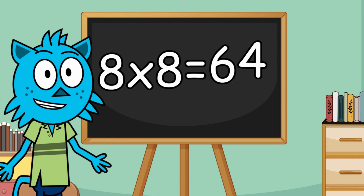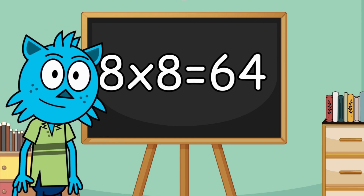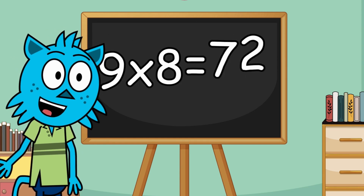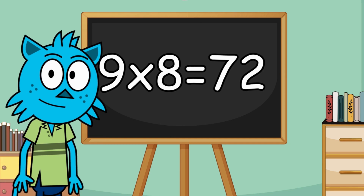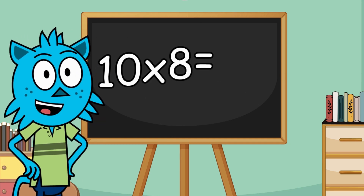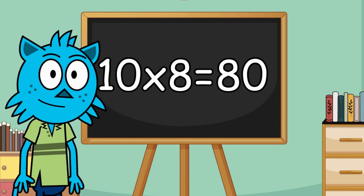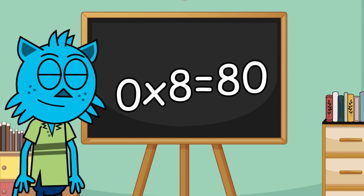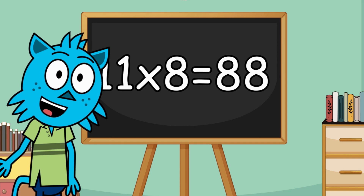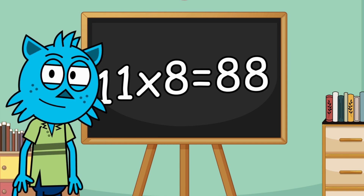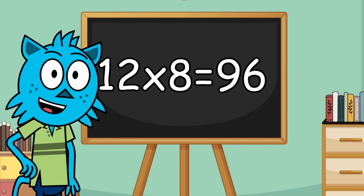Eight times eight is equal to sixty-four. Nine times eight is equal to seventy-two. Ten times eight is equal to eighty. Twelve times eight is equal to ninety-six.